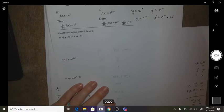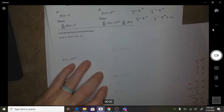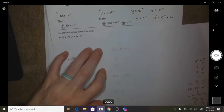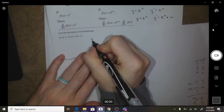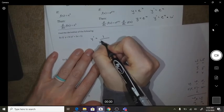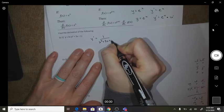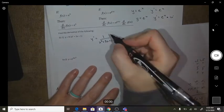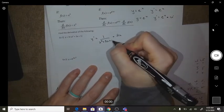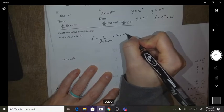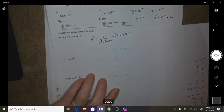Okay, number one, ln of x squared plus 3x plus 1, so the derivative is 1 over u, and then times by the derivative of u.